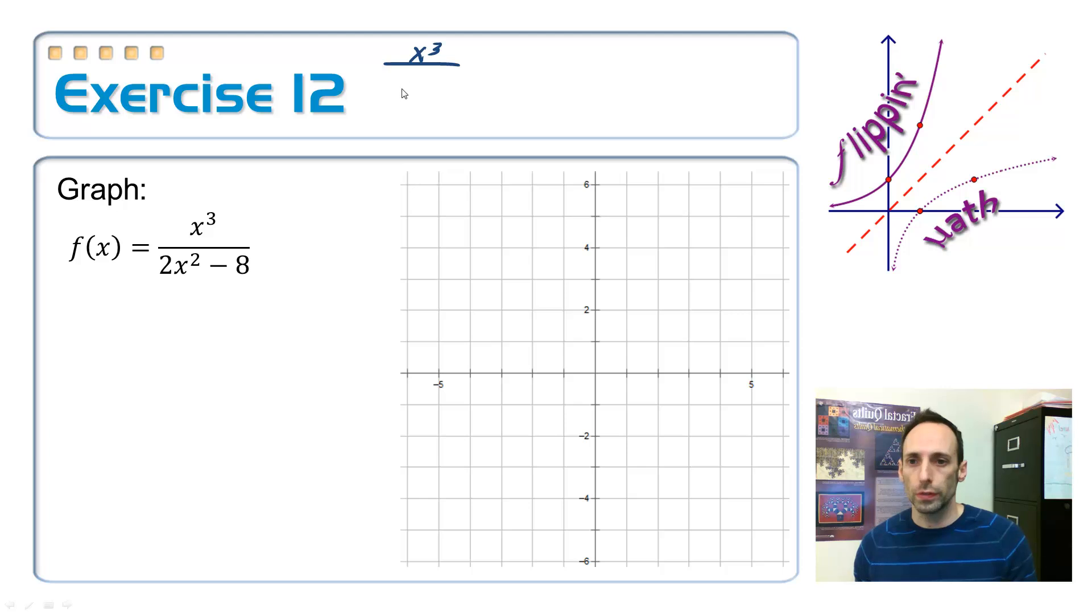x cubed over, pull out a 2, 2x squared minus 4. Hey, which means I can keep factoring. x cubed on top over 2, x plus 2, x minus 2. Okay, any crazy business? Anything going to cancel out? Any holes? Nope. But I do have two vertical asymptotes. One at positive 2 and one at negative 2. So, x is equal to plus or minus 2.